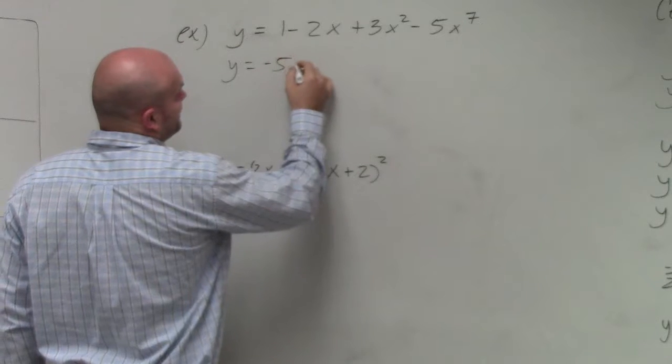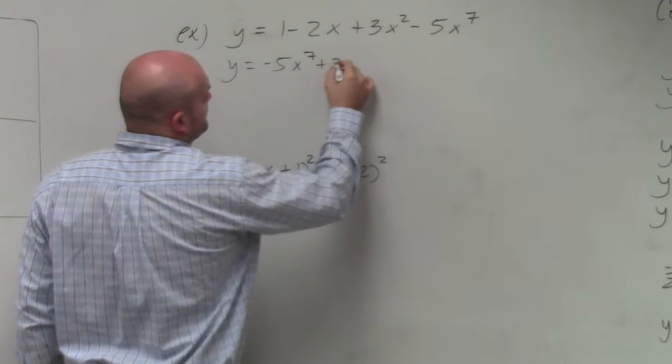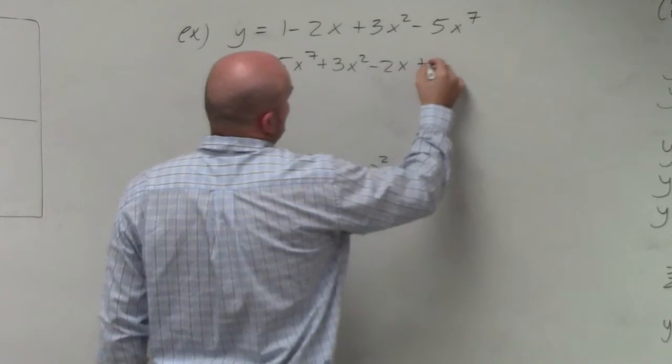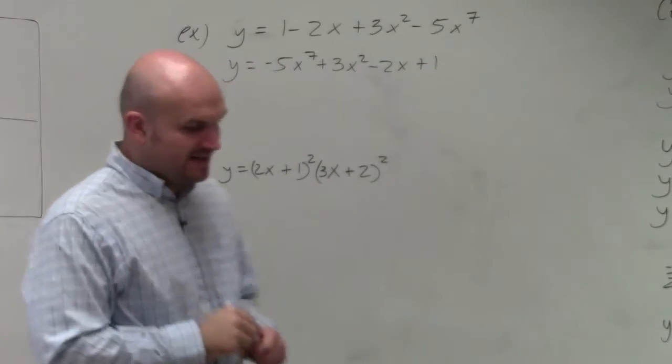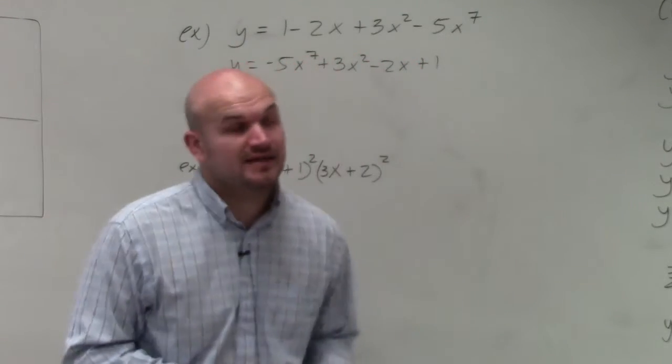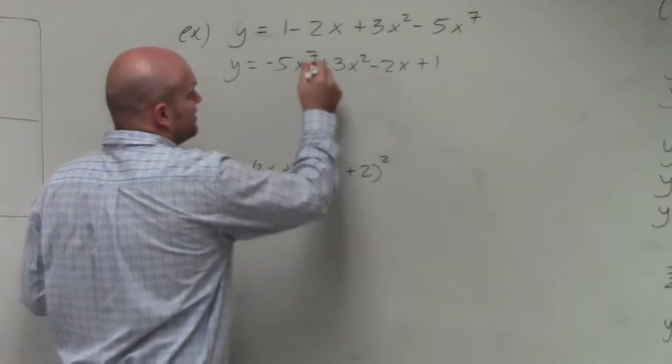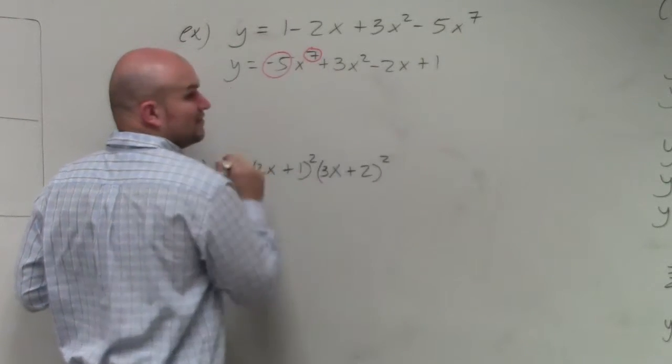So I have negative 5x to the seventh plus 3x squared minus 2x plus 1. Therefore, now I need to identify what is my degree and what is my leading coefficient. So I have my degree here, and here's my leading coefficient.